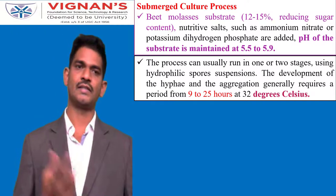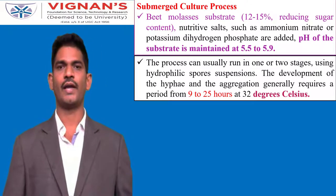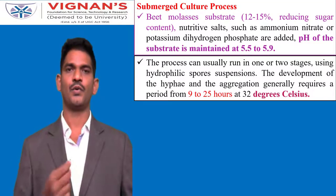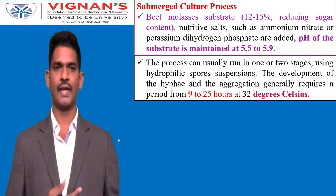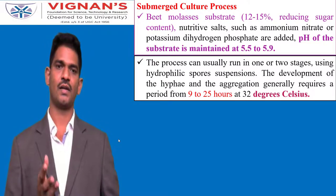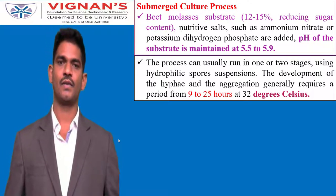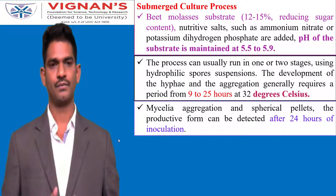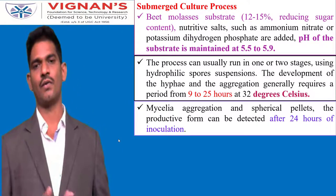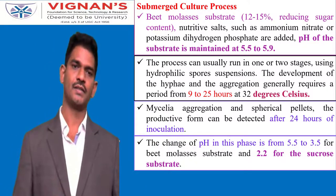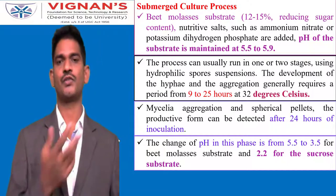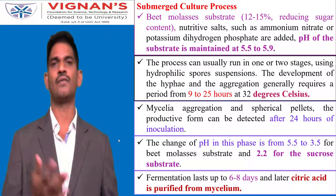The submerged fermentation process can be run in a single stage or multi-stage process, where a hydrophilic spore suspension is first generated in a seed fermentation process to produce Aspergillus niger. Aspergillus niger is cultivated for 9 to 25 hours at 32 degrees Celsius. Mycelial aggregate formation in the medium indicates that citric acid production has started, usually observable after 24 hours of inoculation. Once production begins, pH reduces from 5.5 to 3.5 with beet molasses and to 2.2 with sucrose substrate. The fermentation process runs for 6 to 8 days.